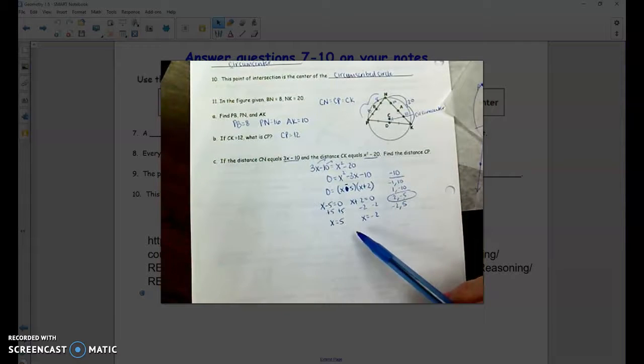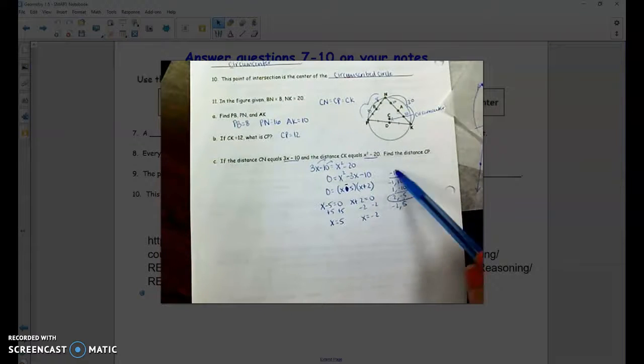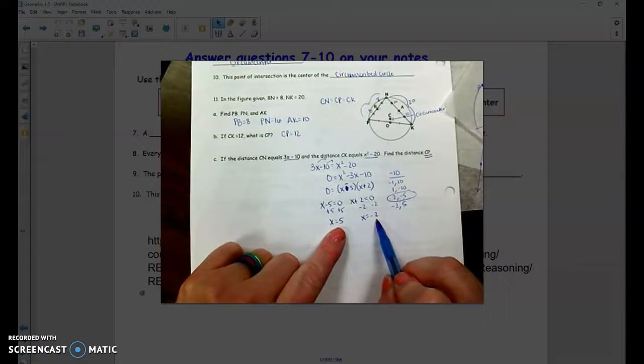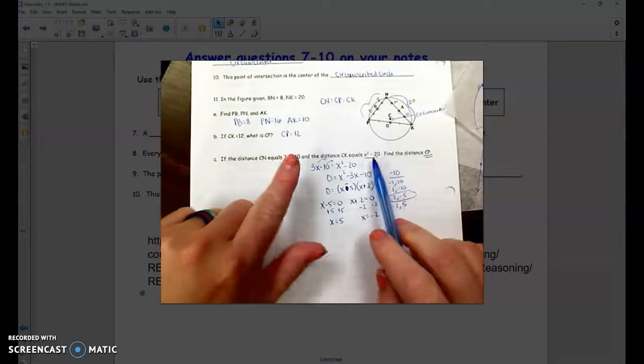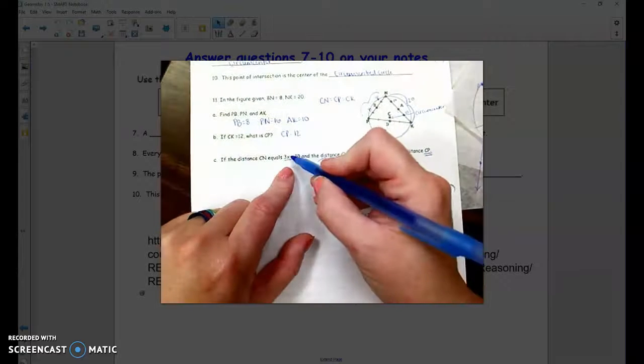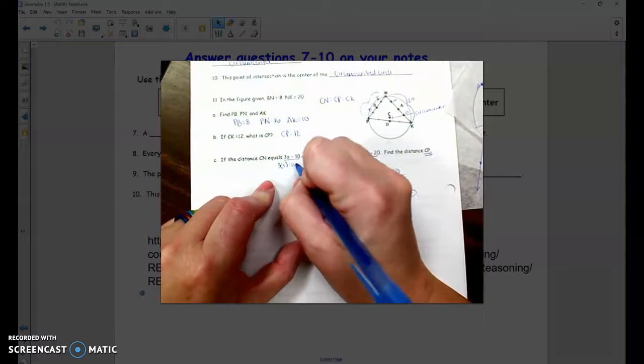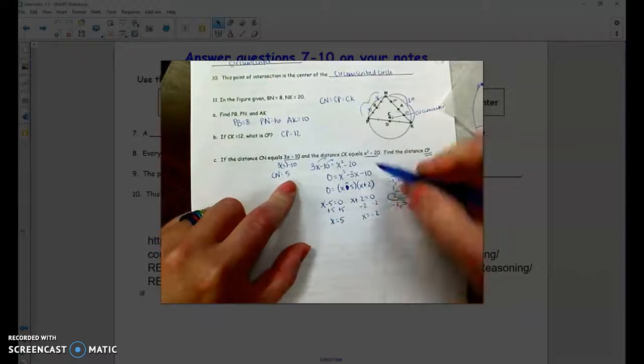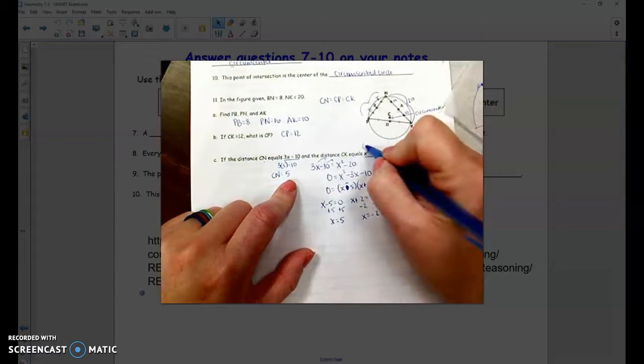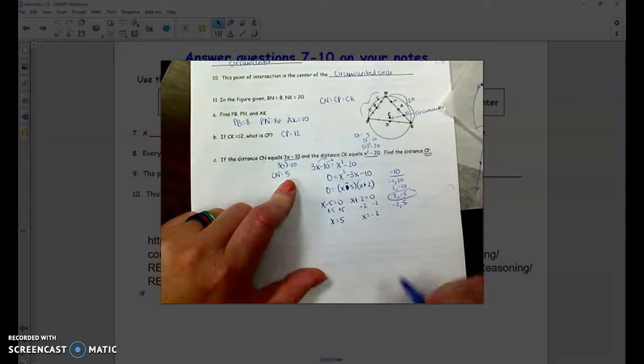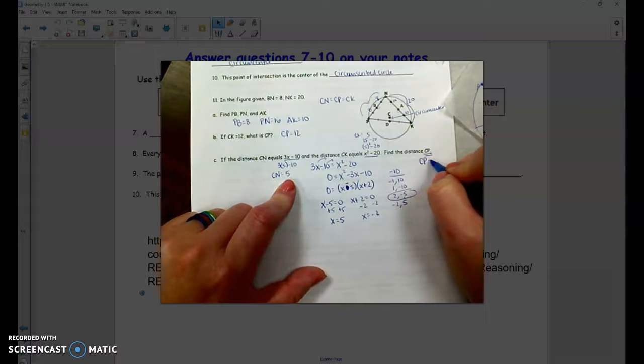Now, in this case, that was not what the question asked for. It did not say find the value of X. It said find the distance CP. Well, I'm going to substitute these values in for CN and CK. They should equal each other and would also give me what CP is. Well, if I put 5 in for X here, 3 times 5 is 15, minus 10 is 5. So CN would equal 5. If I put it in for CK, I would have 5 squared minus 20. 5 squared is 25, minus 20 is also 5. So CK would equal 5. So that tells me CP is equal to 5.